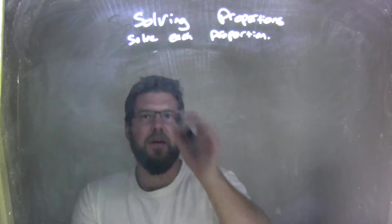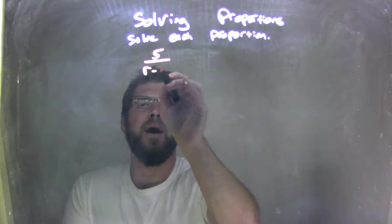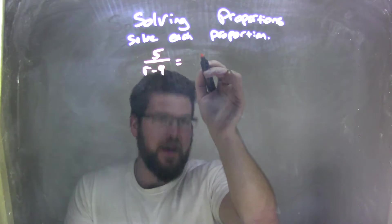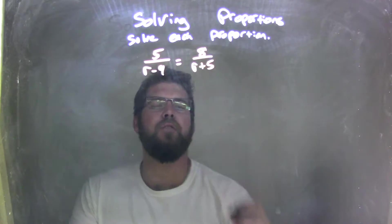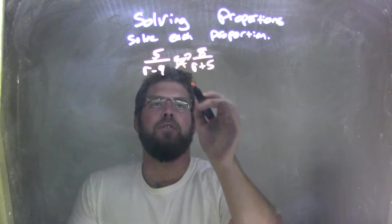So if I was given this proportion here, 5 over r minus 9 equals 8 over r plus 5. First things first, I've got to cross multiply. Let's cross multiply here.